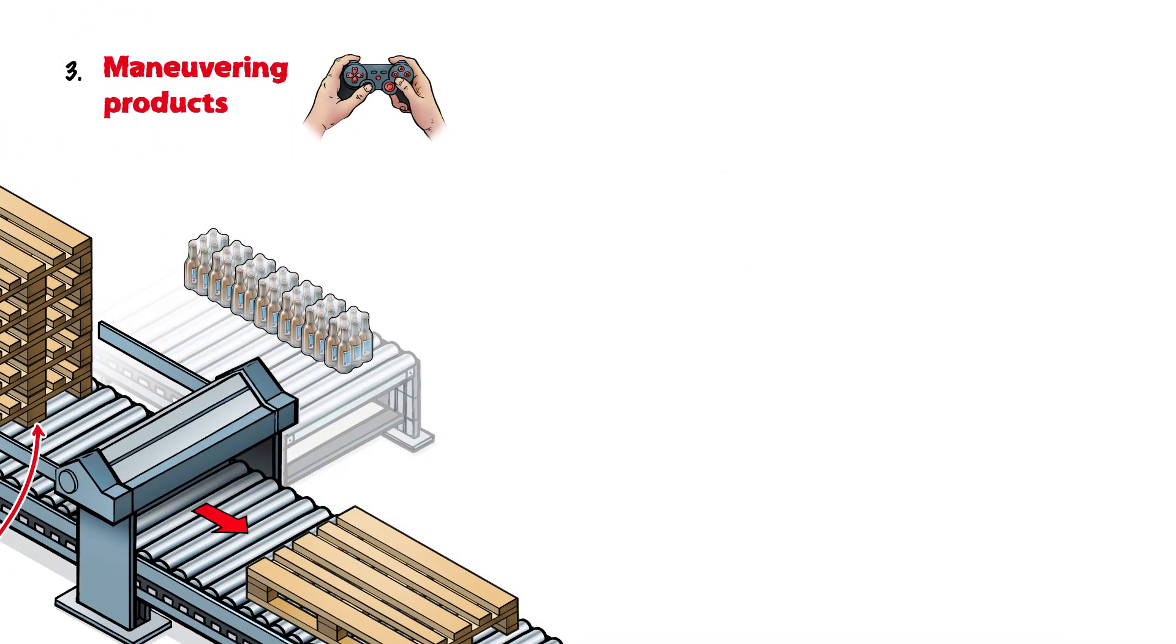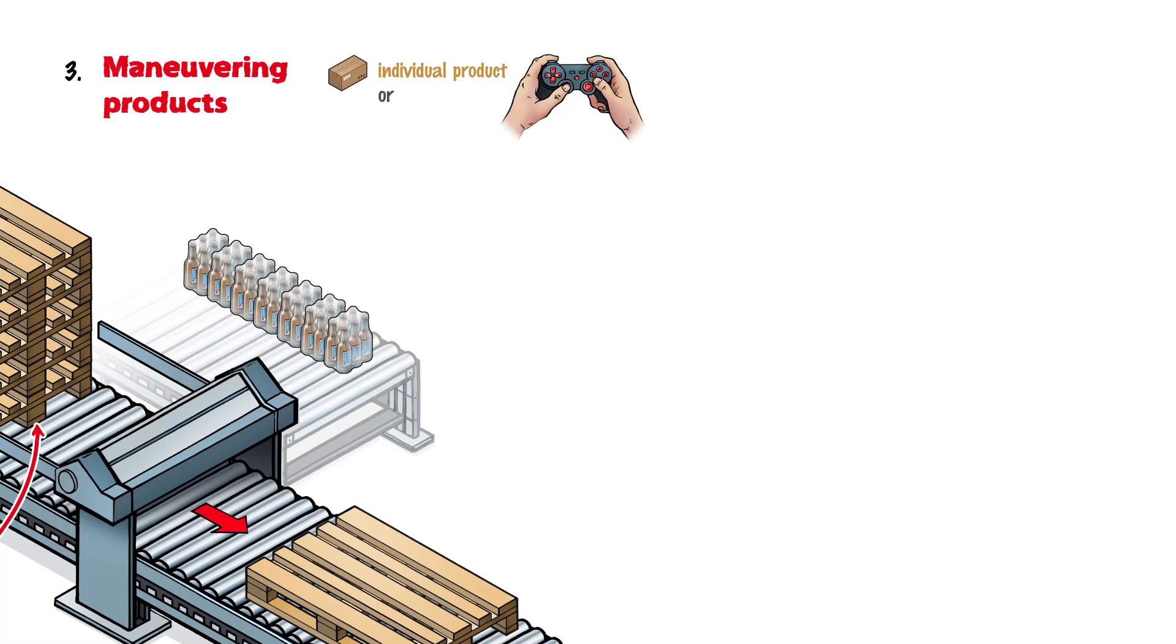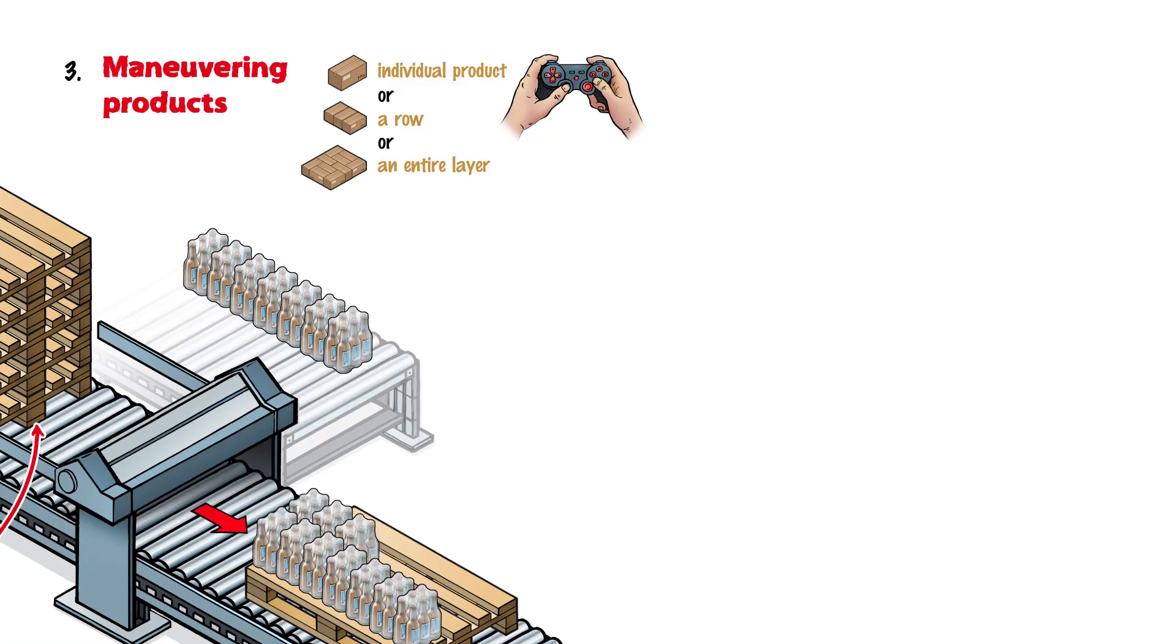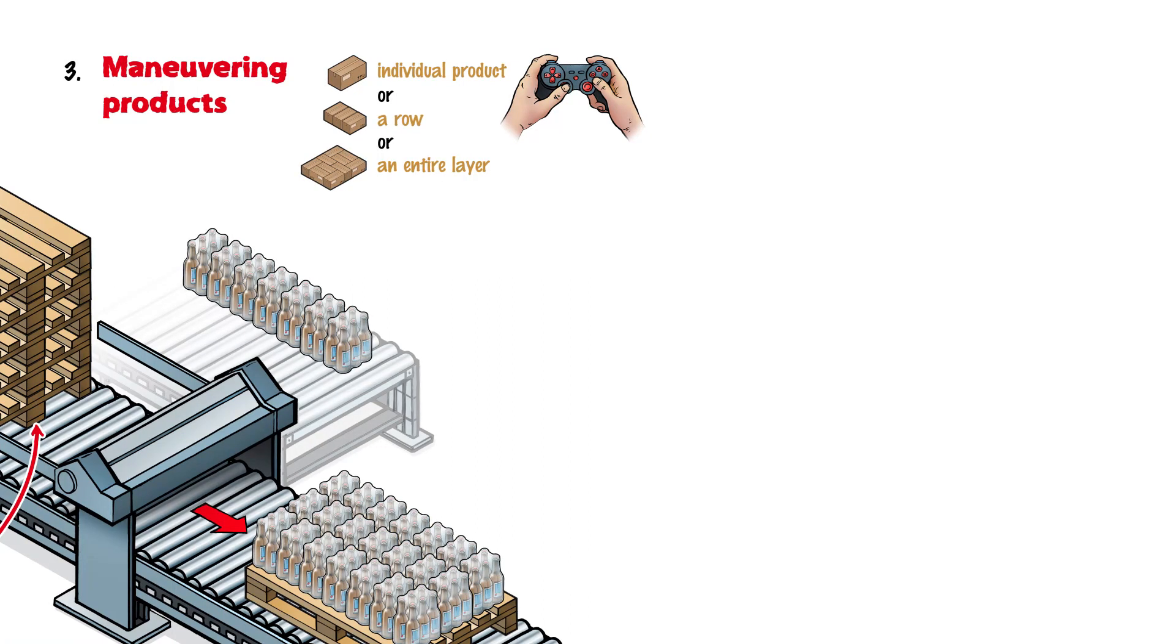What happens next depends on how many products are being moved at once. Individual products, a full row, or an entire layer can be put onto the pallet in a single operation. As with Tetris, the product is moved and rotated before being maneuvered into its final position.